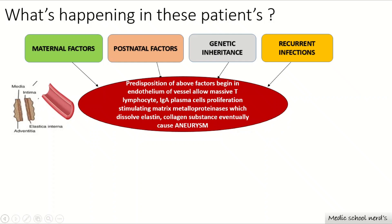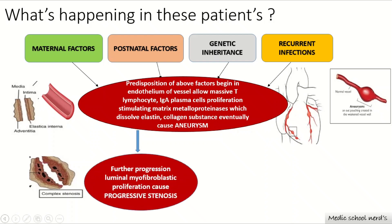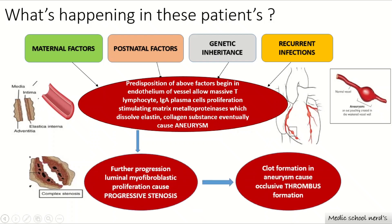Matrix metalloproteinase is an important enzyme functioning in both physiological and pathological processes. It degrades the collagenous substances in surrounding structures, causing the vessel to lose its elastin and collagen, eventually causing the blood vessel to form an out-pouching — an aneurysm. Over time, luminal progression causes myofibroblastic proliferation, fibrosis of the blood vessels, progressive stenosis, obstruction of blood flow, clot formation in the aneurysm, occlusive thrombus, and ultimately myocardial infarction.